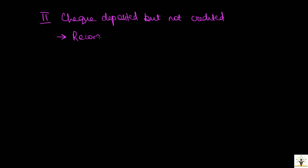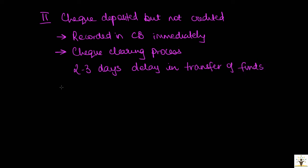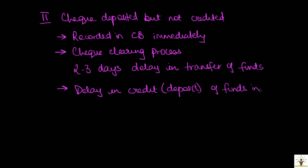The second type of timing difference is checks deposited but not credited. A check received is recorded in the cashbook on the date when the check is received or when the pay-in slip is filled and the check is paid into the bank. However, it may take a few days for the bank to credit the amount in the bank account due to the check clearing process, wherein it takes a few days for the interbank transfer to be completed. Meanwhile, the cashbook balance may not match the bank statement.